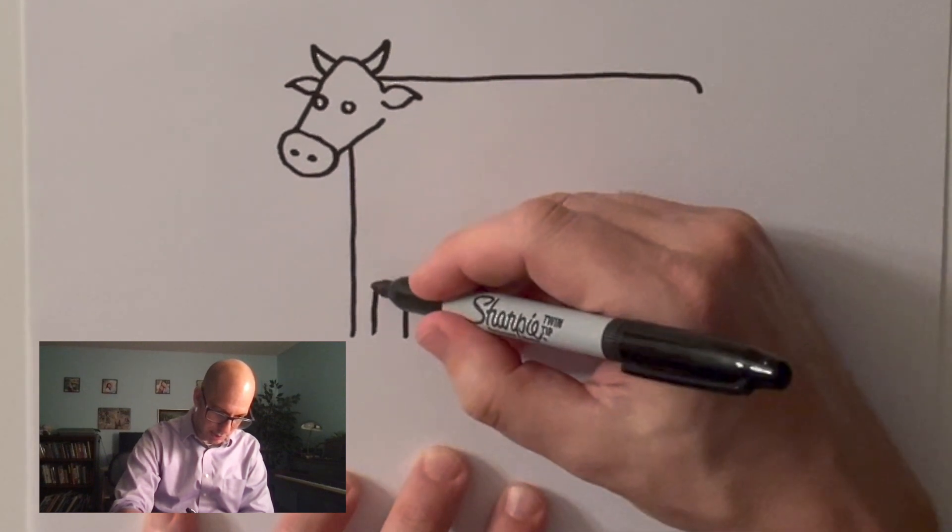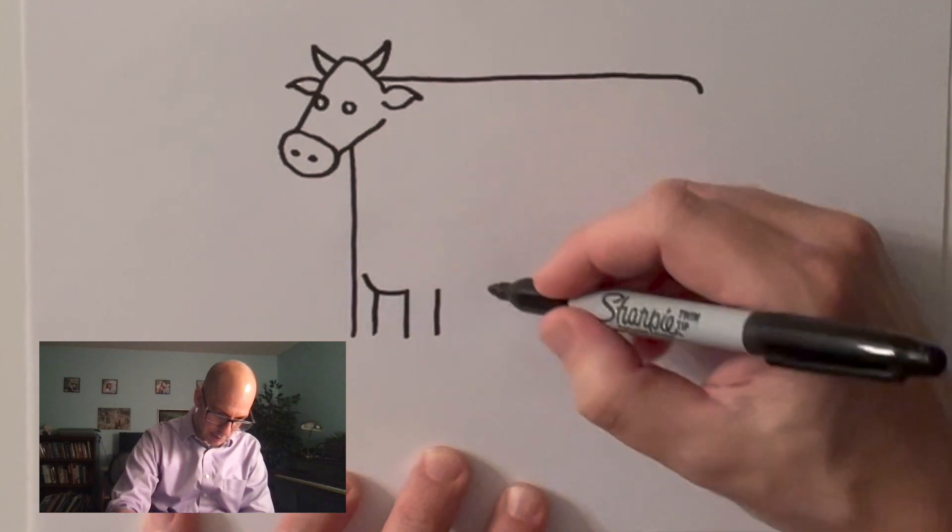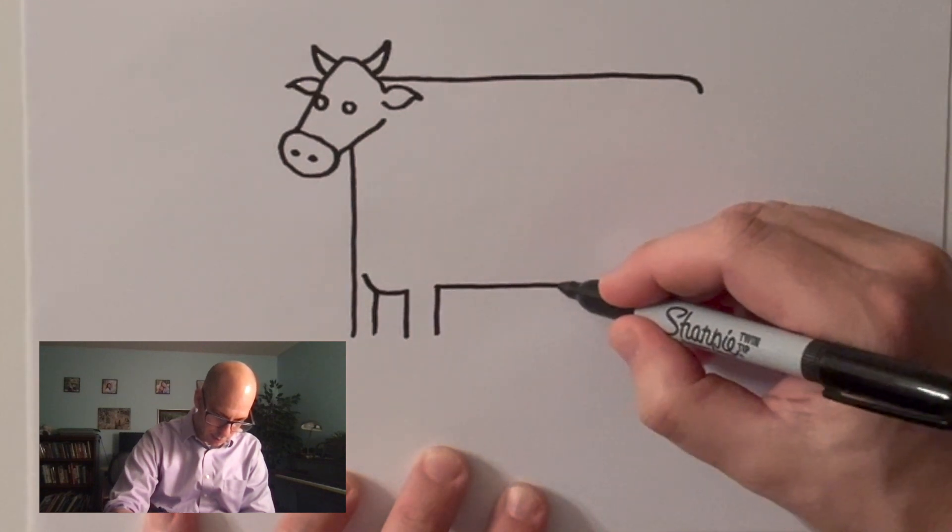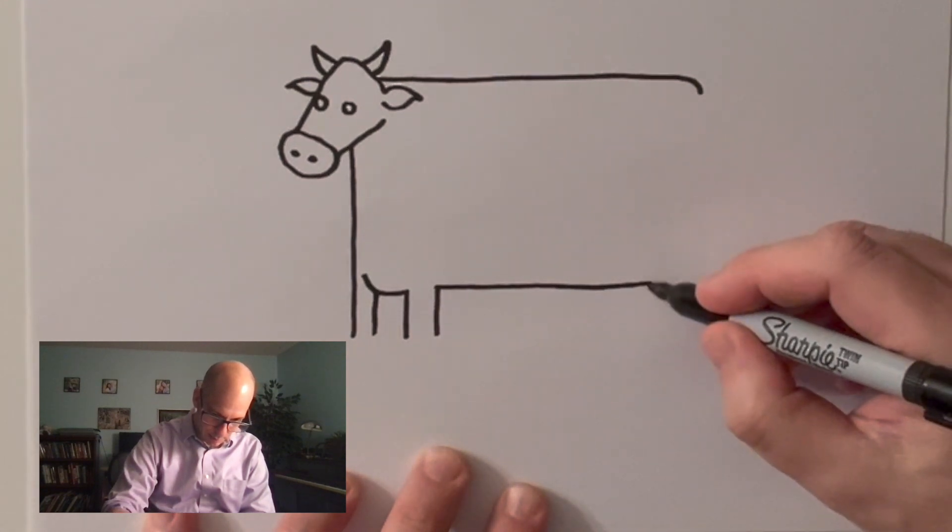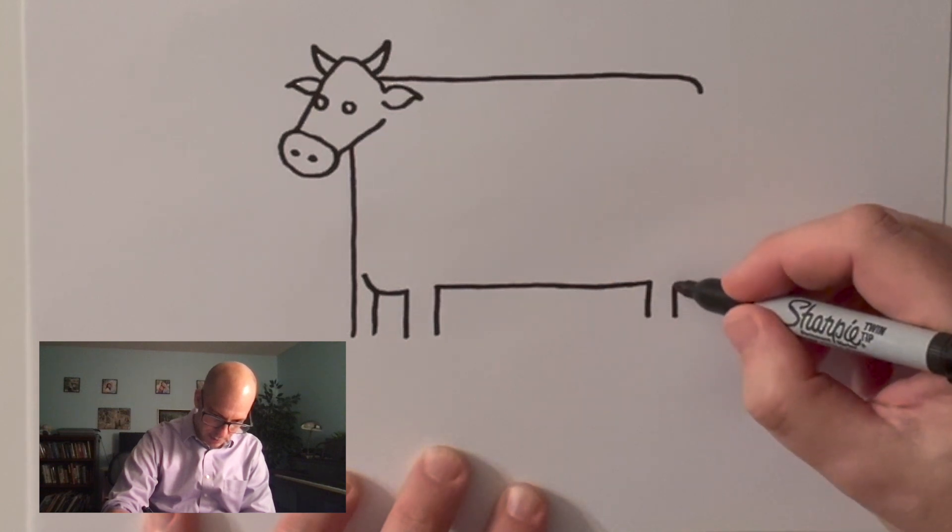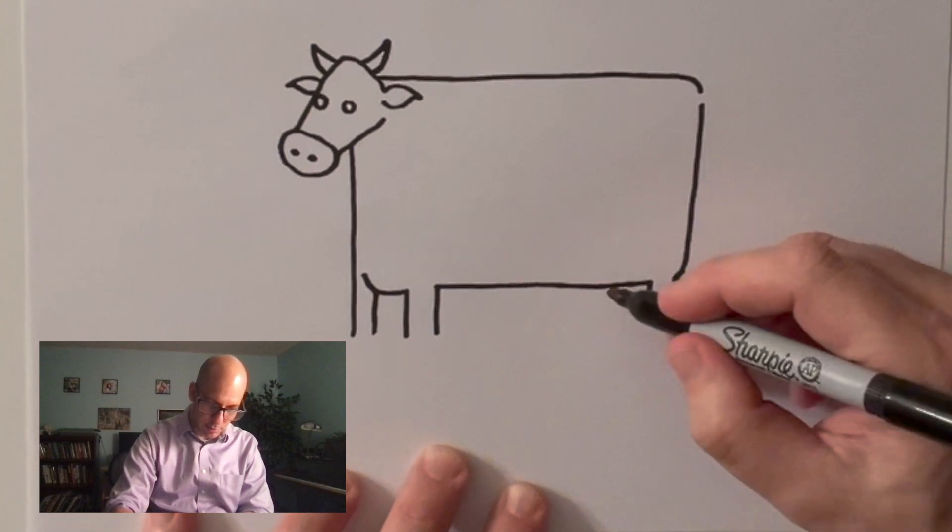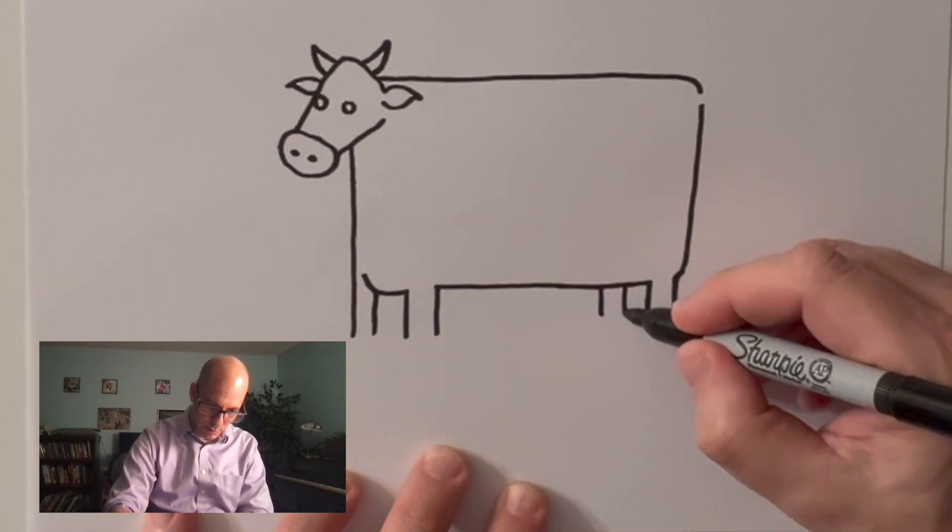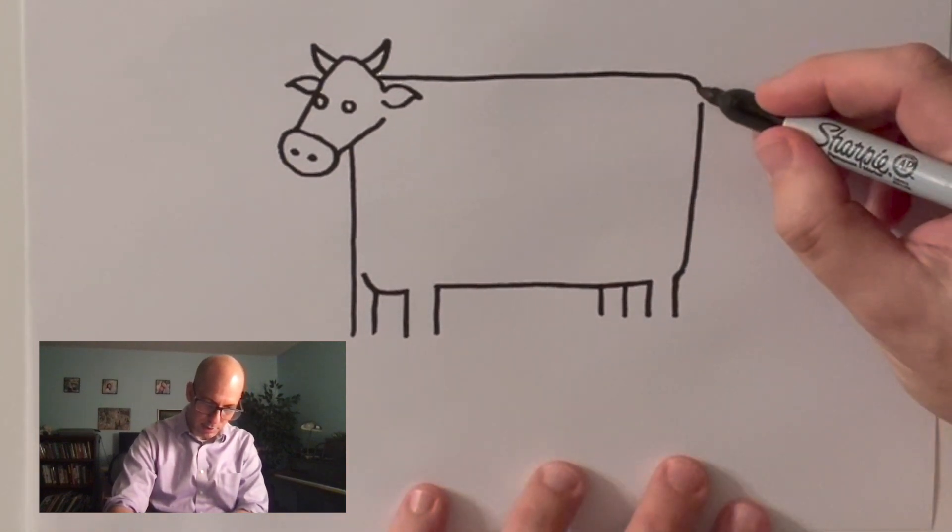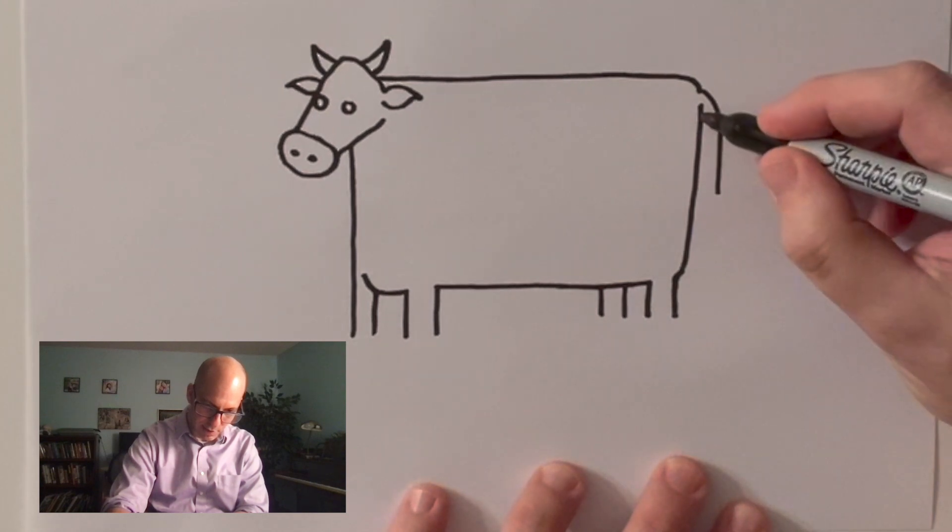And I like to put little stubby legs on them. I basically just make rectangles with legs. I'm not sure why I find this so funny. This is my cow. You'll notice I left a little gap right here - that's because my cow has to have a tail, right?